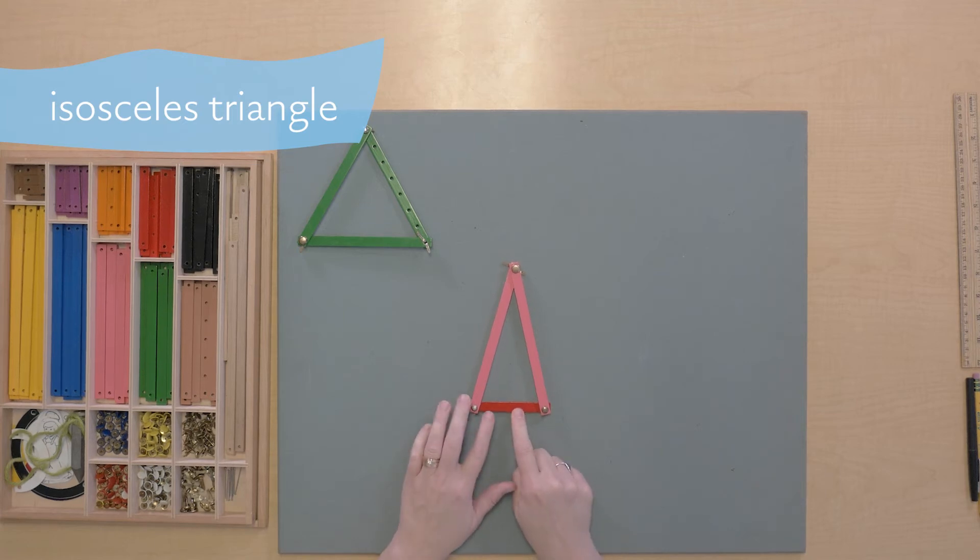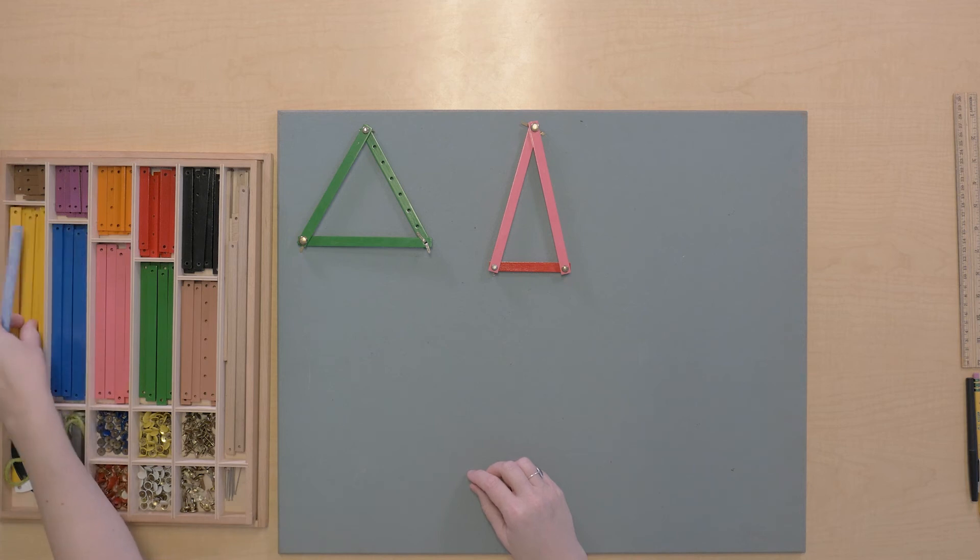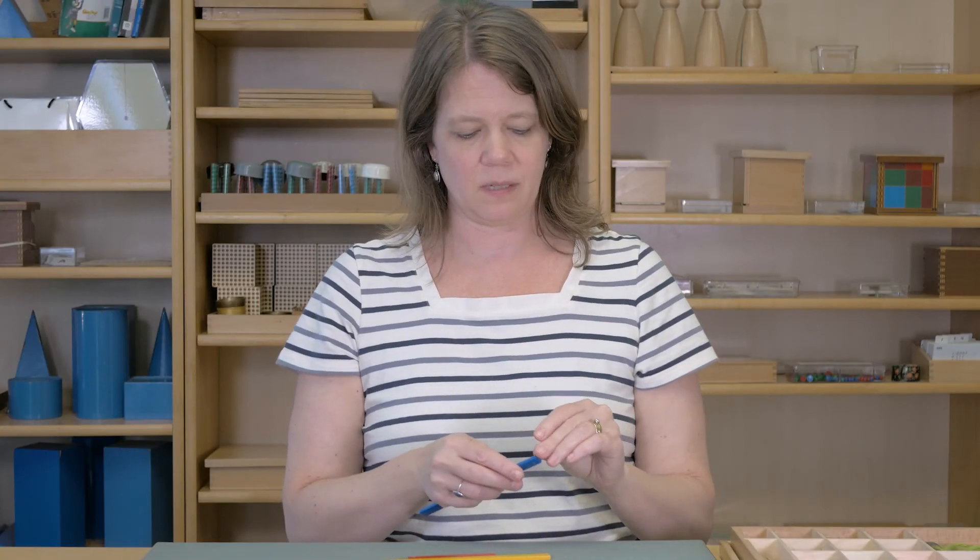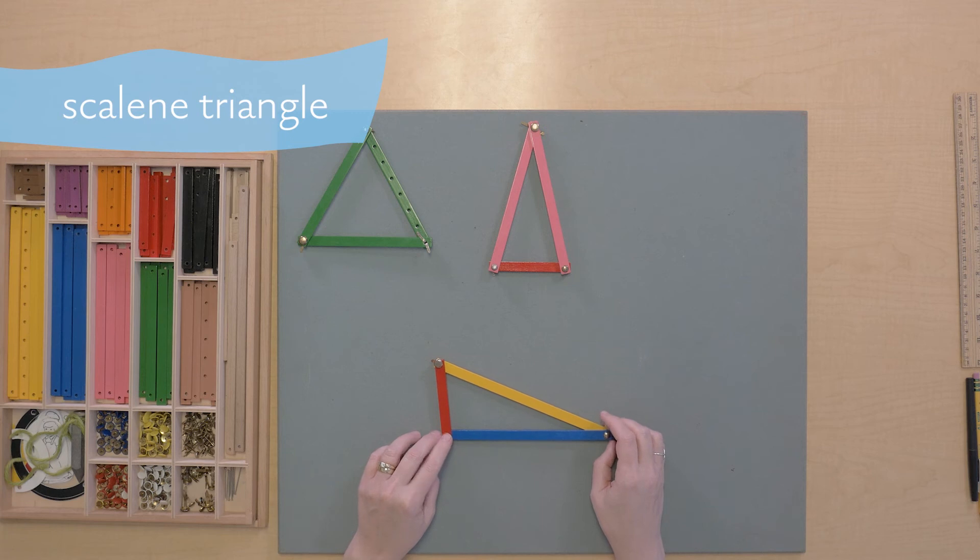This is an isosceles triangle. Now there's one other type of triangle. And if you'll notice, when we have a triangle whose lengths are all different, we call this a scalene triangle. Scalene.